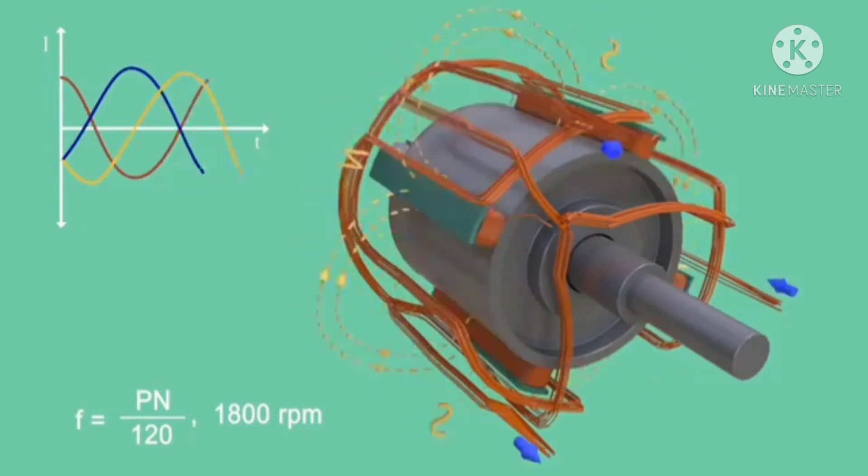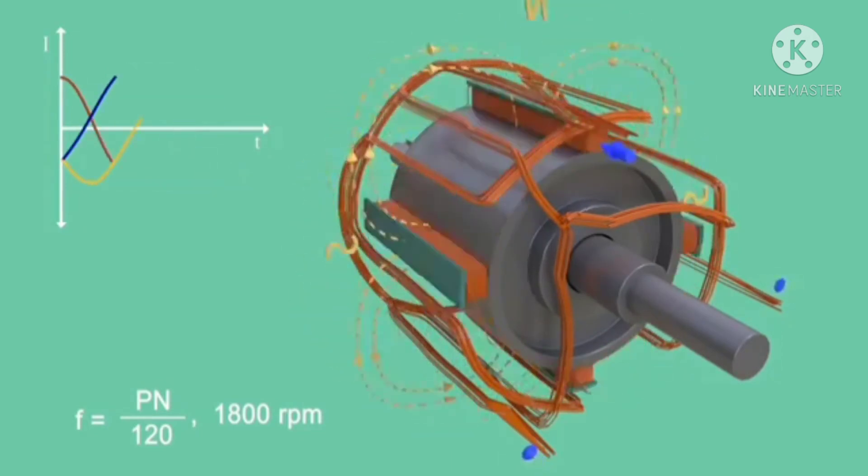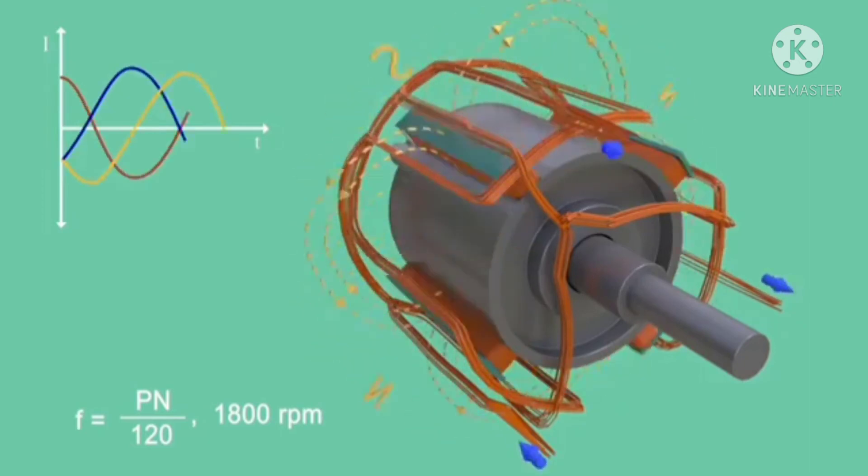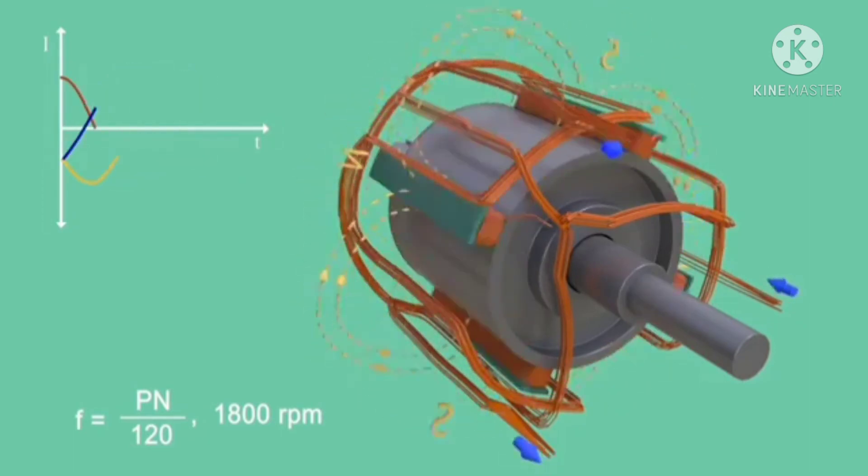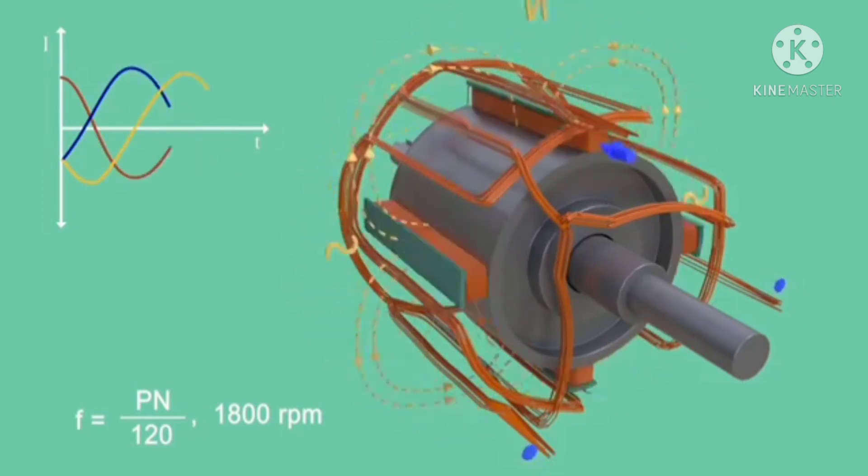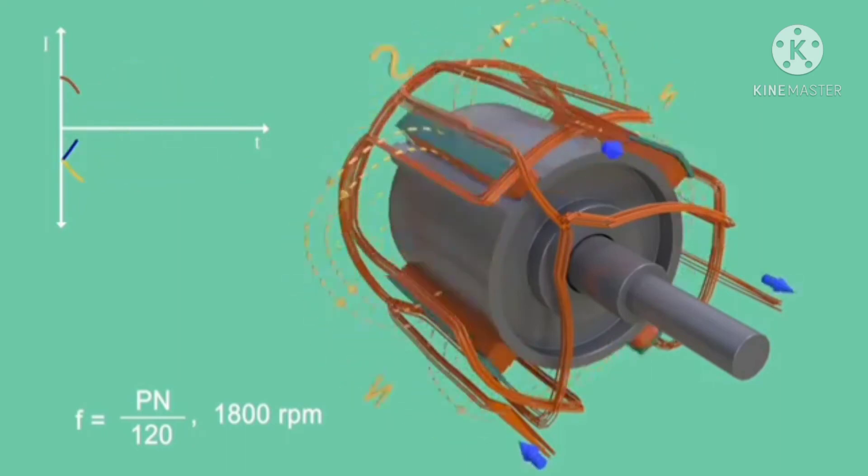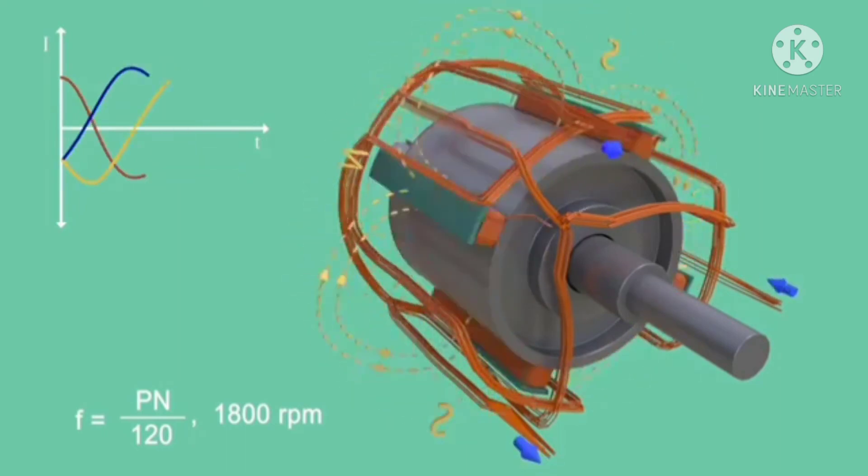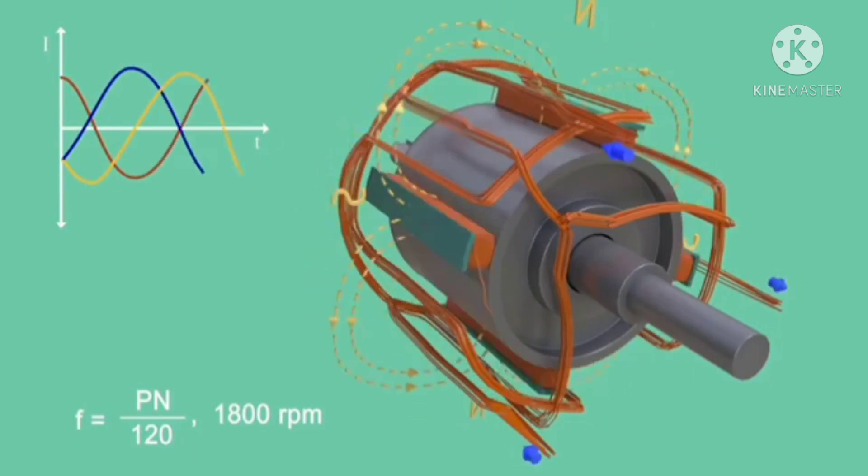So salient pole rotors generally have 10 to 40 poles, which demands lower rpm. Salient pole rotors are used when the prime mover rotates at relatively lower speeds, 120 to 400 rpm, such as water turbines and diesel engines.